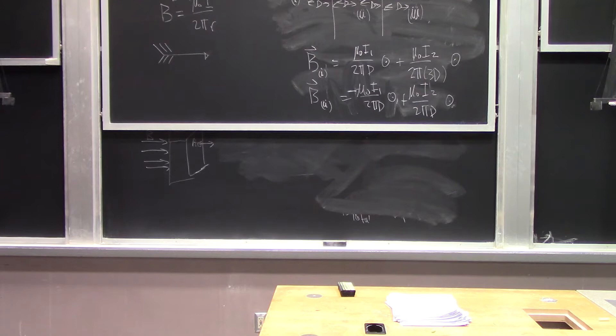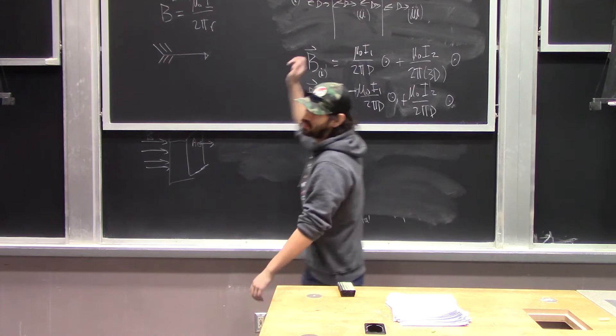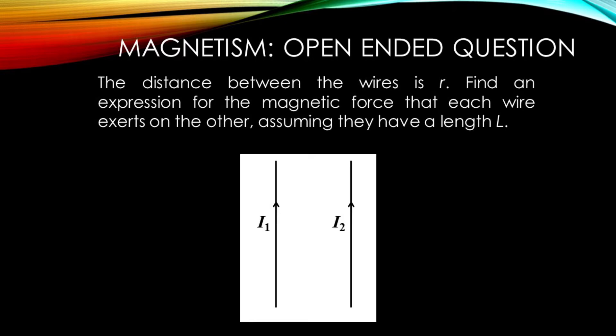Now we consider the case where two wires carry currents in the same direction. The distance between the wires is R. We want to find an expression for the magnetic force that each wire exerts on the other, assuming they have some length L.